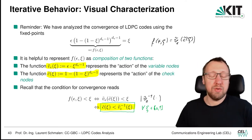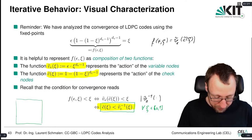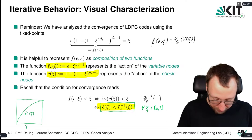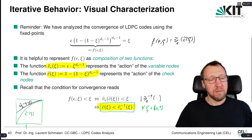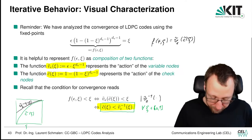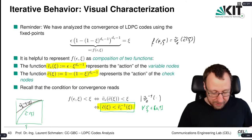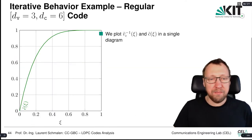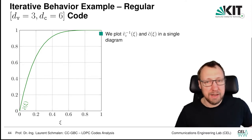This is something we can now visualize. We make a graph and plot the two functions: C̃(ξ) as a function of ξ, and Ṽ_ε^(−1)(ξ). If Ṽ_ε^(−1)(ξ) is strictly larger than C̃(ξ), we have convergence. We plot Ṽ^(−1) and C̃ in a single diagram.